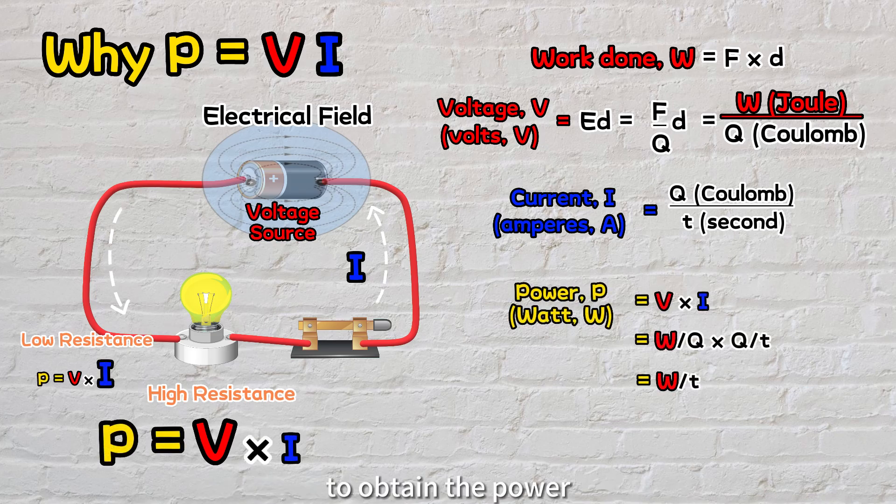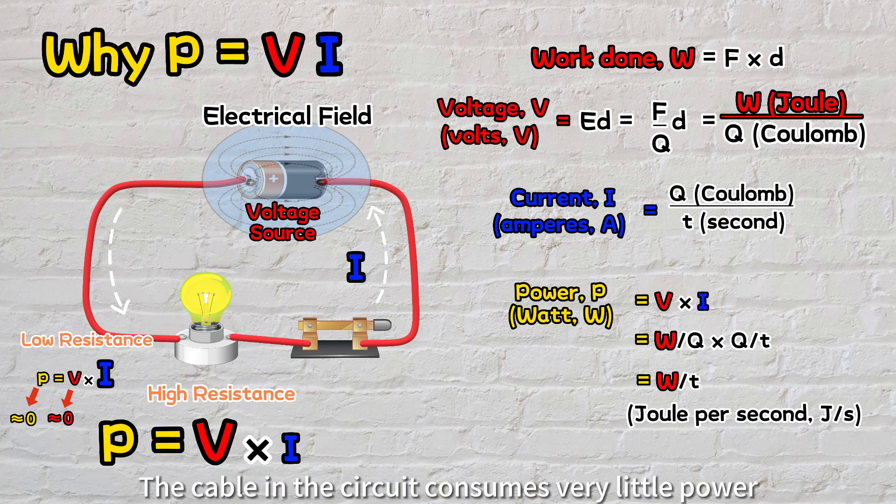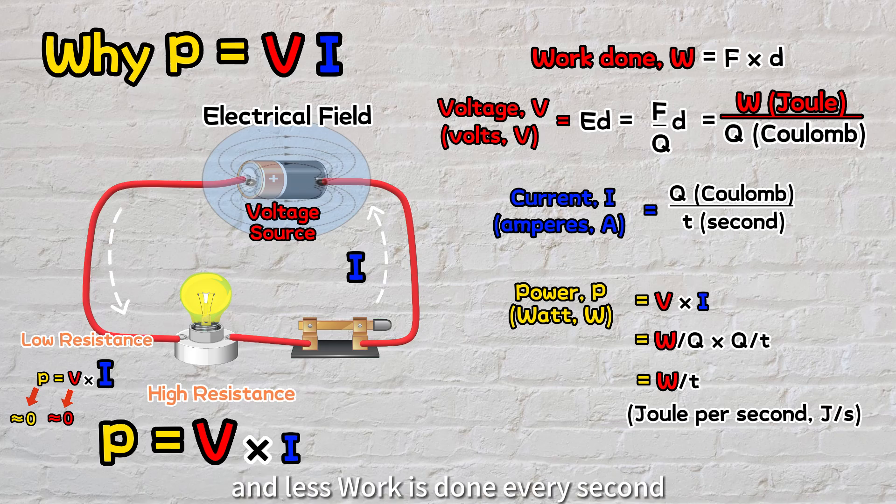To obtain the power, we can multiply the voltage across each component in joules per coulomb or volts by the current in coulombs per second or ampere. As a result, we obtain the number of joules of energy being consumed every second, or commonly known as watts. Now here's an assumption made: the cable in the circuit consumes very little power because it has low resistance and less work is done every second when moving the charges, so we often neglect its work done or voltage drop and power consumption. On the other hand, the light bulb has the highest work done or voltage drop across it, therefore consuming most of the power. As the charges pass through the light bulb, they collide more often with the atoms and transfer their kinetic energy into light and heat energy, making the bulb glow.